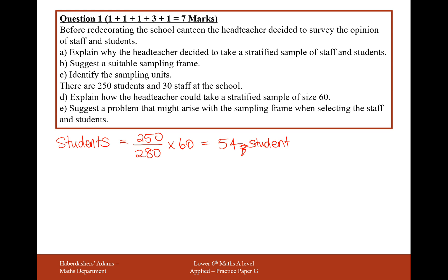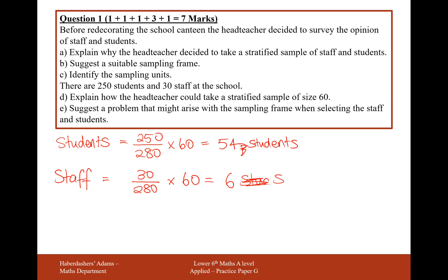We can do exactly the same thing for staff. The proportion of staff we want in this sample is 30 out of 280, of those 60 people. Deducing this from 60, we get six staff members.